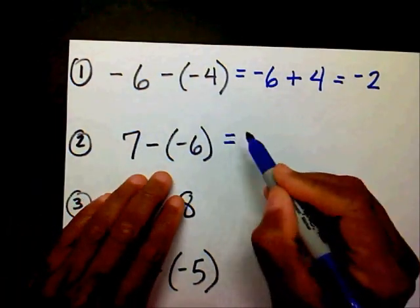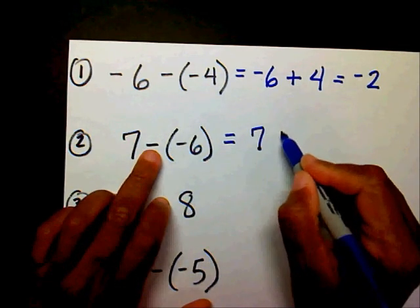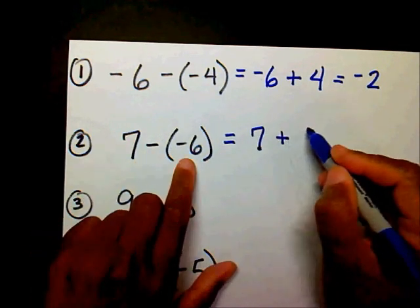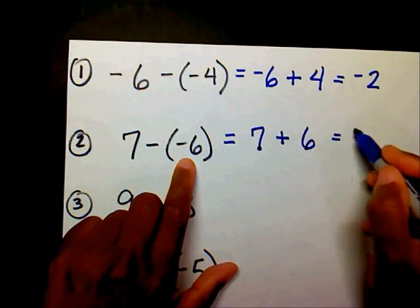The next problem, number 2. I want to bring my 7. And the opposite of negative 6 is positive 6. So 7 plus 6 is 13.